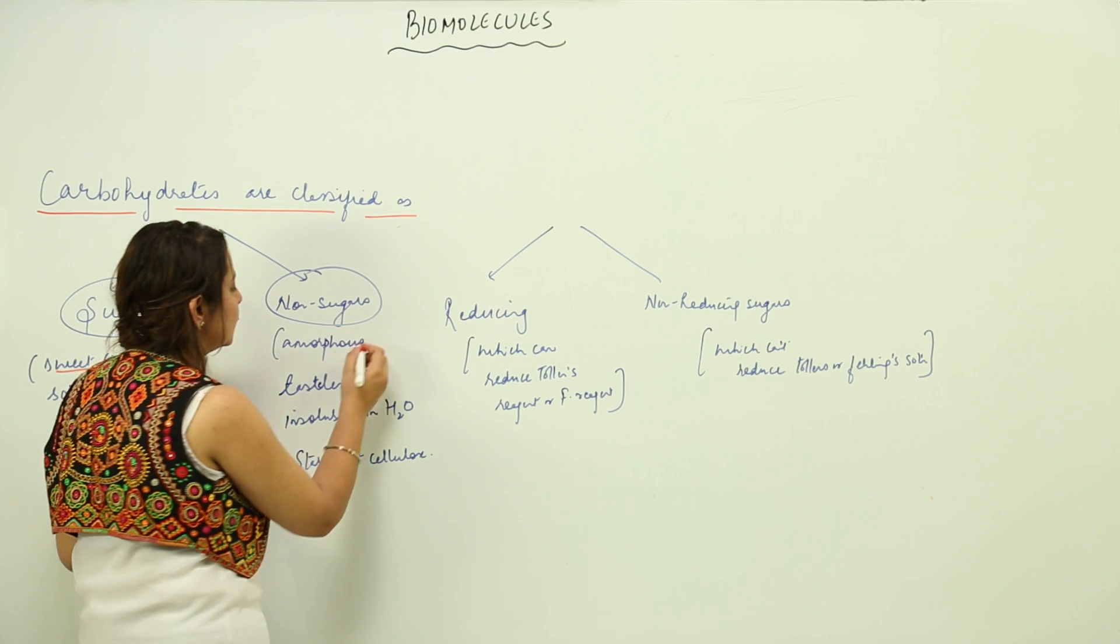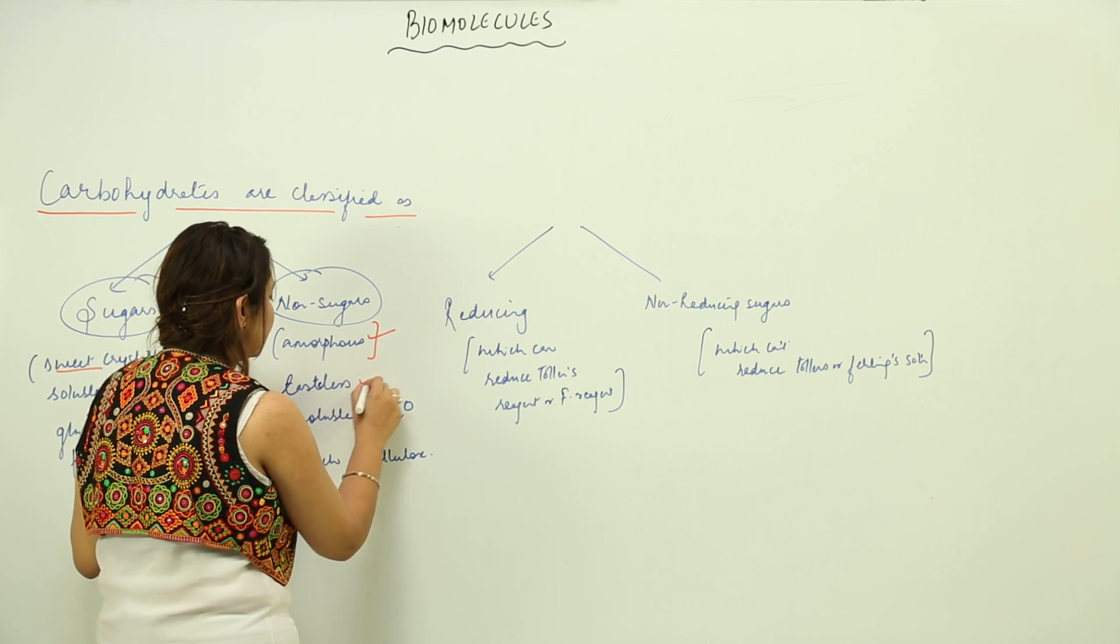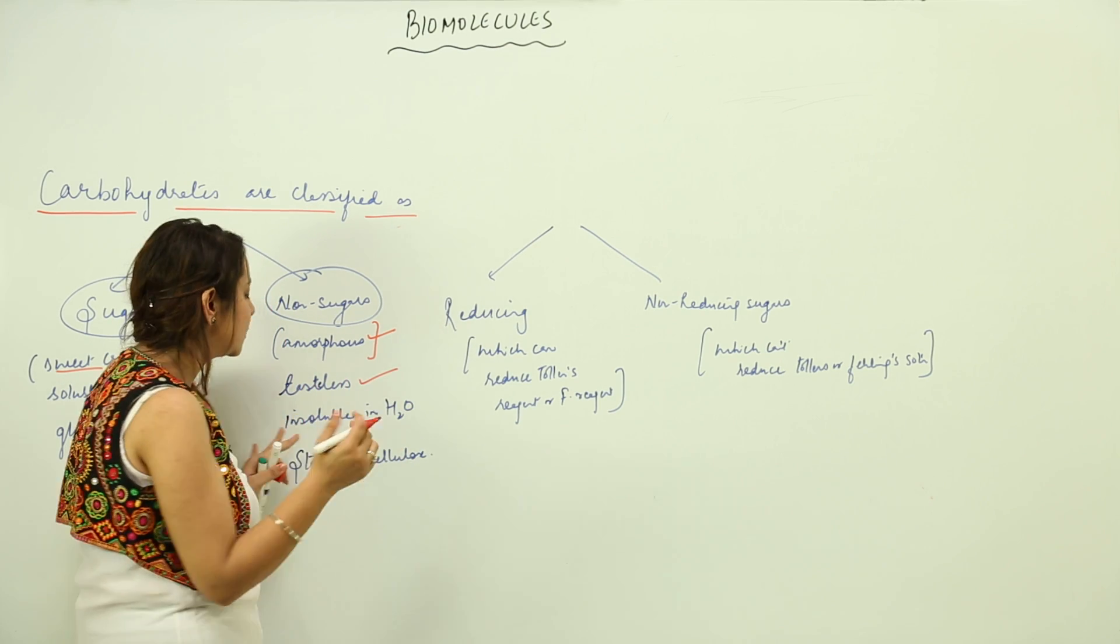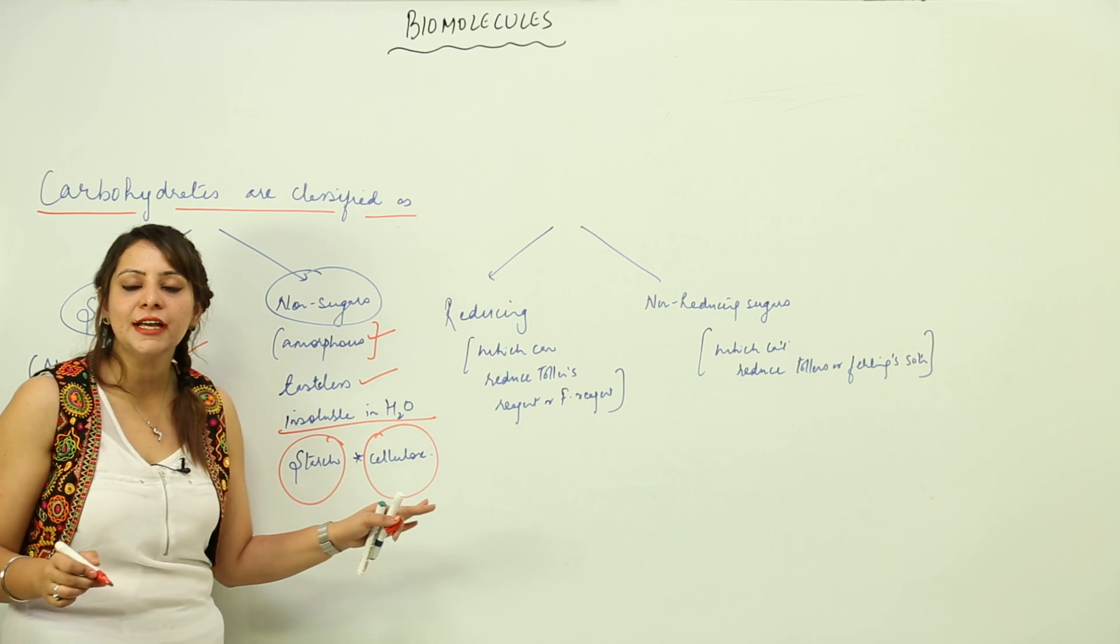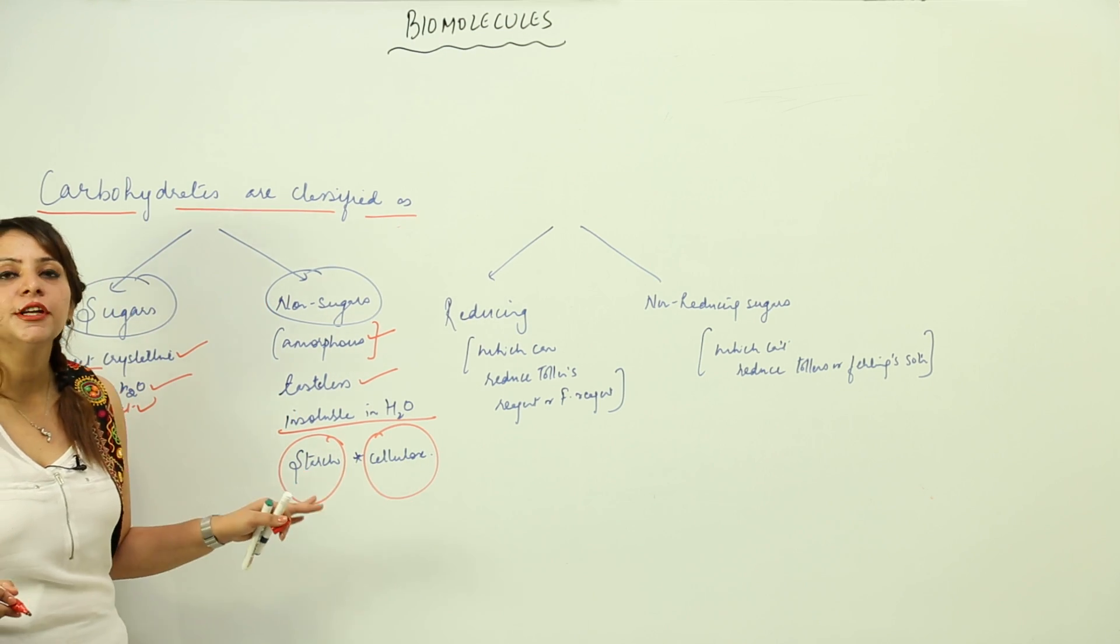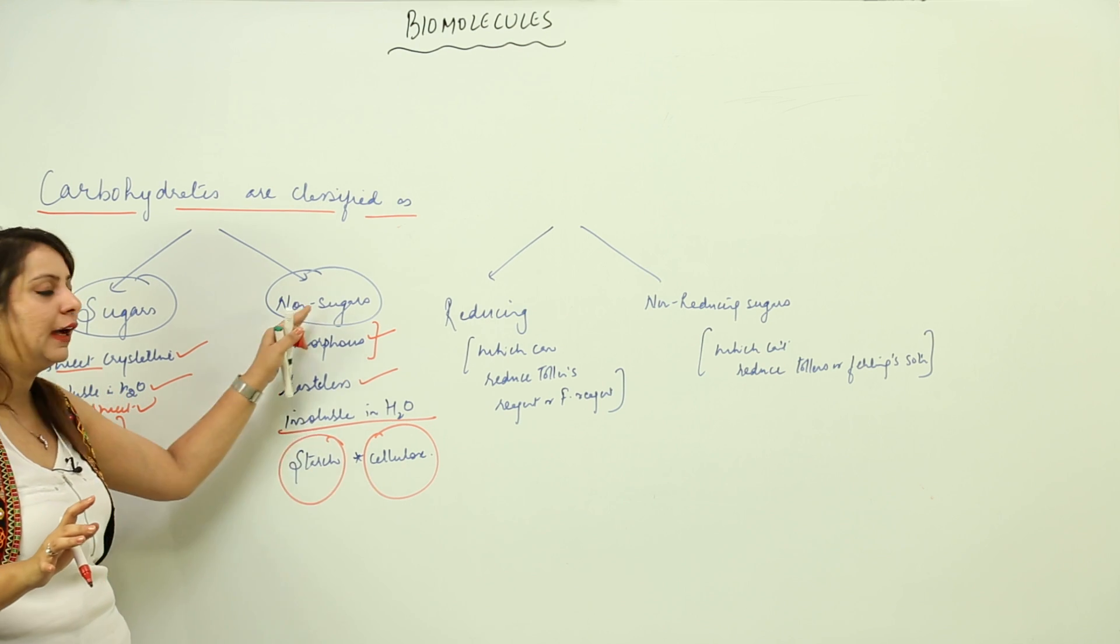Non-sugars are those which are amorphous—in powder form—and tasteless. They are insoluble in water, like starch and cellulose. Cellulose is a structural component of the plant cell wall. It is tasteless, amorphous, and regarded as a non-sugar.